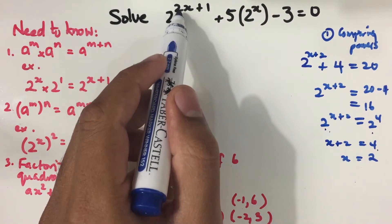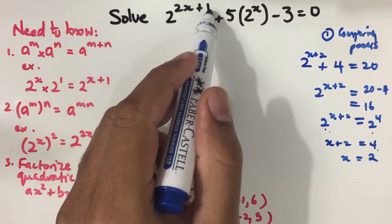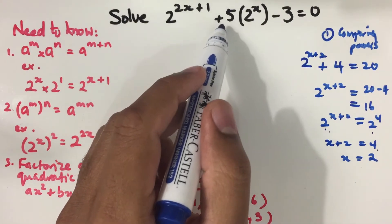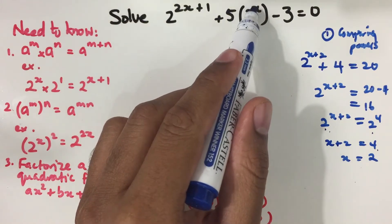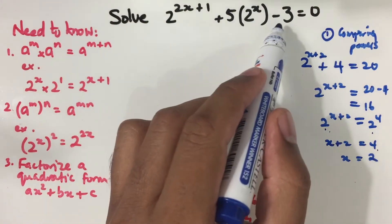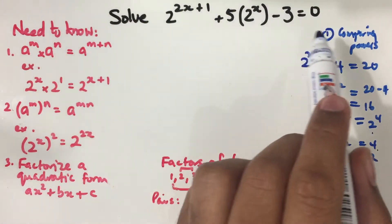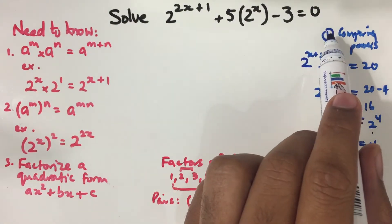Solve for 2 to the power of 2x plus 1 plus 5 times 2 to the power of x minus 3 is equal to 0.